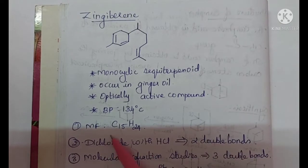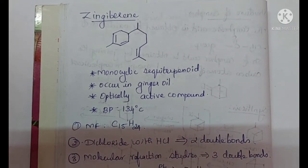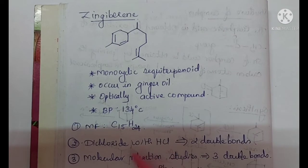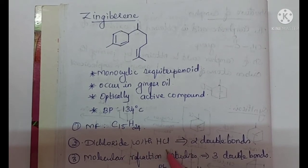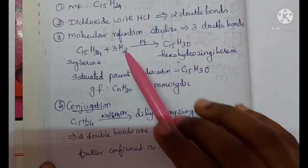The molecular formula of Zingiberine is C15H24. The next step is we are going to find whether it is saturated or unsaturated compound. It forms dichloride with HCl, so it adds two molecules of hydrogen chloride to form dichloride, which indicates that it has two double bonds.